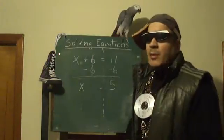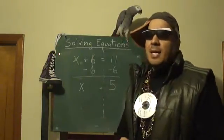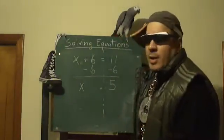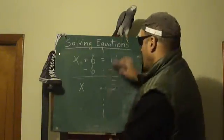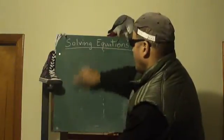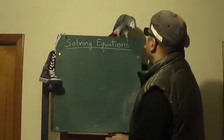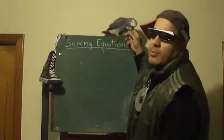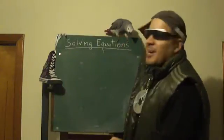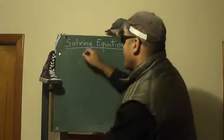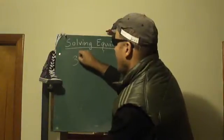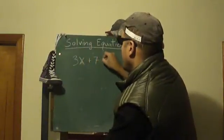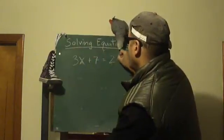We really want to know these strategies because mental math is not always going to be the answer. For example, for this next equation — let's try this multi-step equation: 3x plus 7 equals 25.